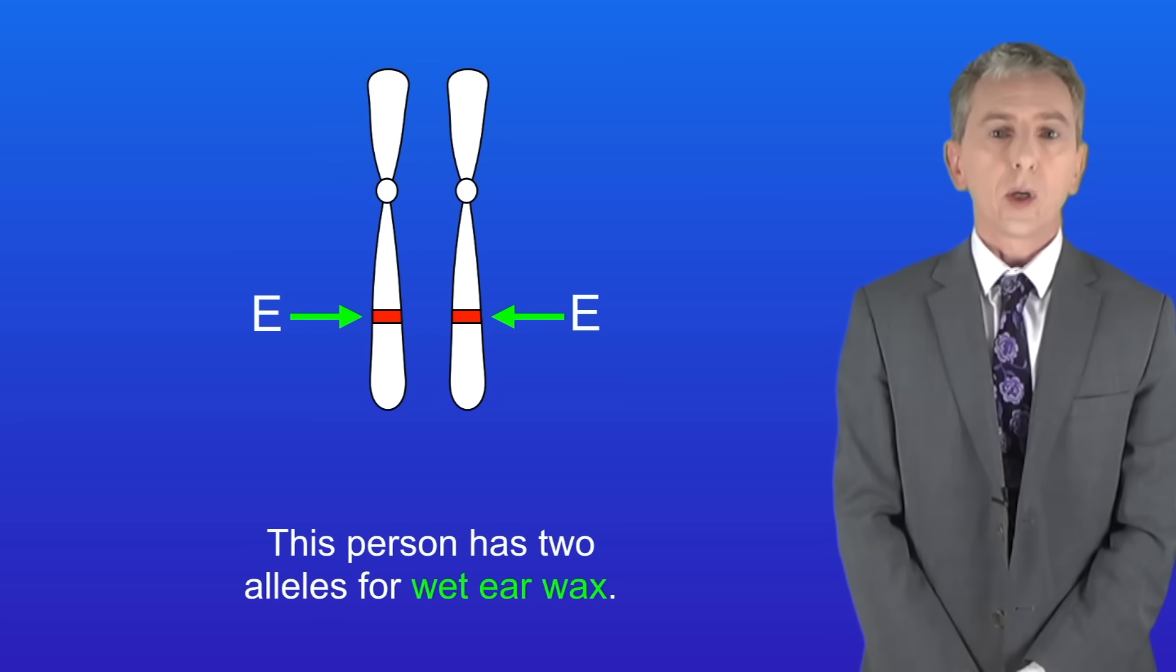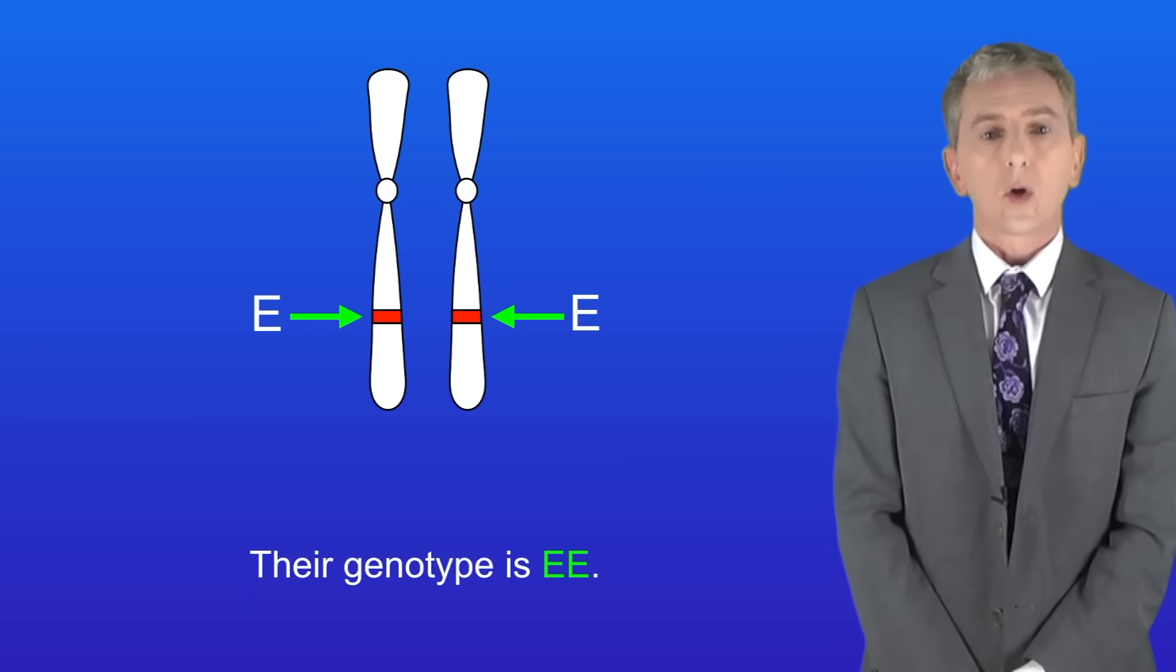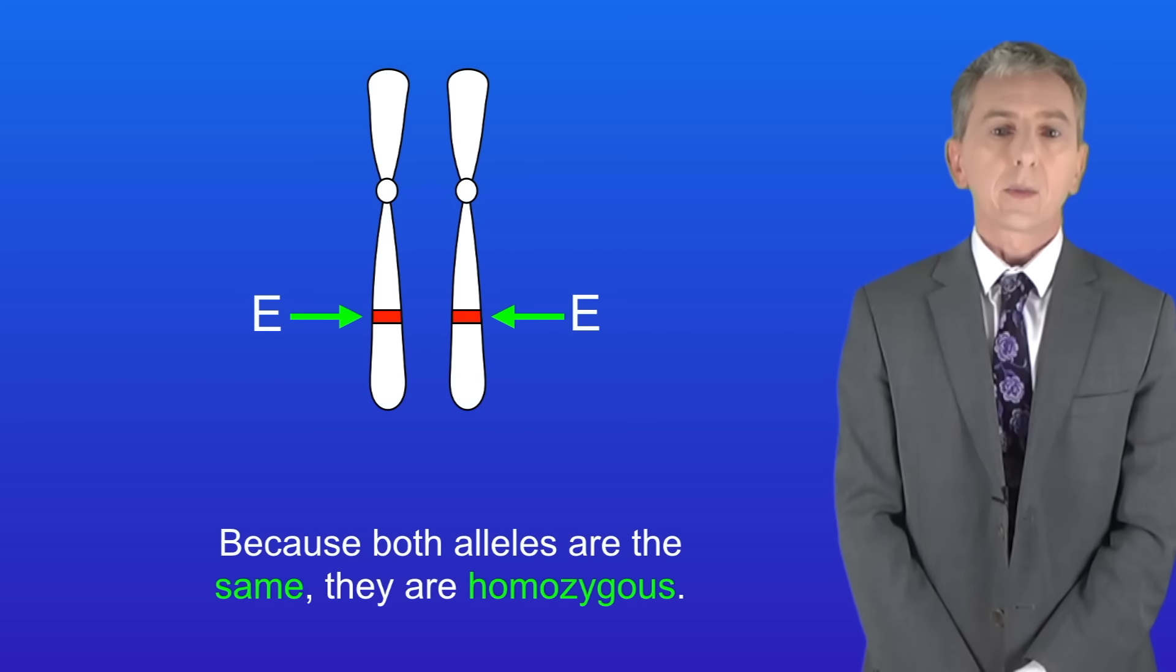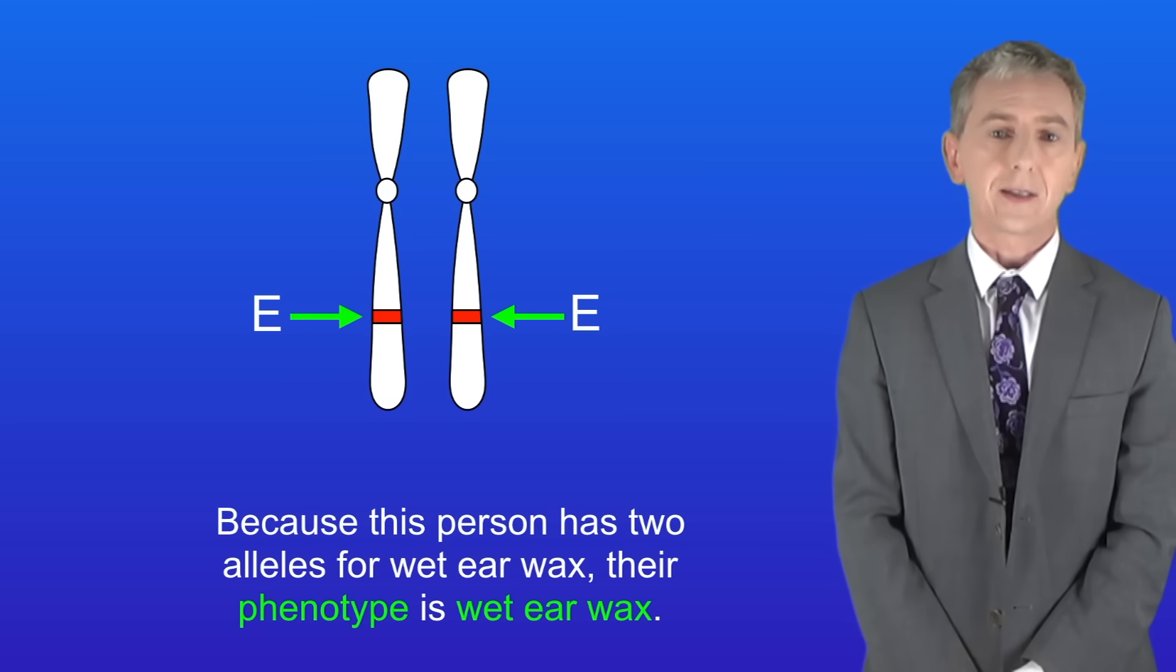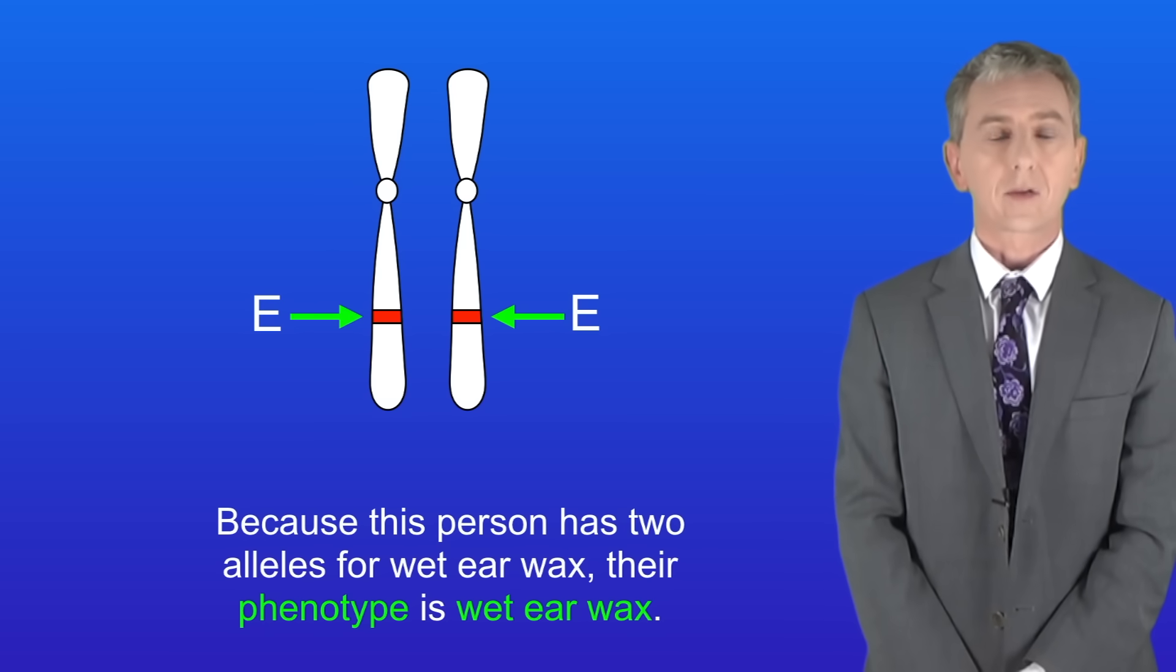This person has two alleles for wet earwax, so their genotype is capital E capital E. And again, because both alleles are the same, they're homozygous. So because this person has two alleles for wet earwax, their phenotype is wet earwax.